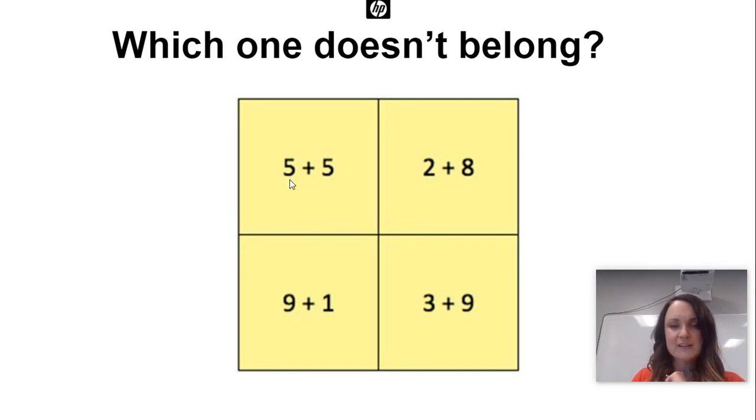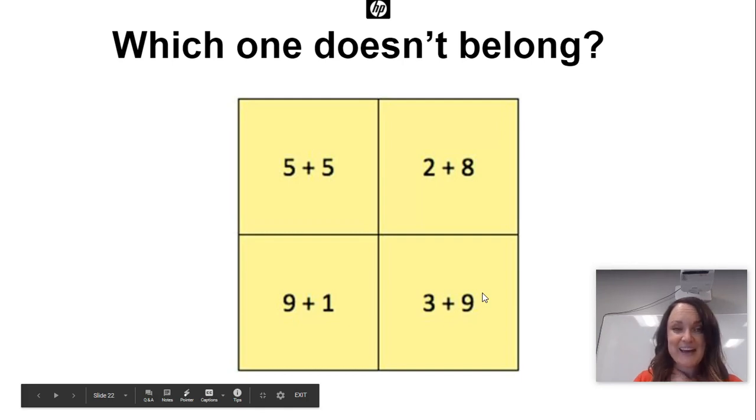Okay the total here is twelve. What's five and five? That total is ten. Two and eight. Oh you know it. It's another ten. Nine and one. Another ten. Very good. So which one doesn't belong? Three plus nine because the sum is different. Awesome guys.